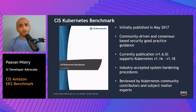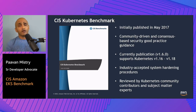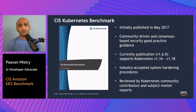The CIS Kubernetes Benchmark is a community-driven and consensus-based project initially published in May 2017 to provide security good practice guidance for Kubernetes clusters. Currently under publication version 1.6, it supports Kubernetes versions 1.16 to 1.18. It includes industry-accepted hardening procedures for the Kubernetes control plane and data plane, and is reviewed by Kubernetes community contributors and subject matter experts. Our customers were trying to use it to secure their Amazon EKS clusters, however, since the benchmark was intended for unmanaged Kubernetes clusters, they weren't able to use it appropriately.